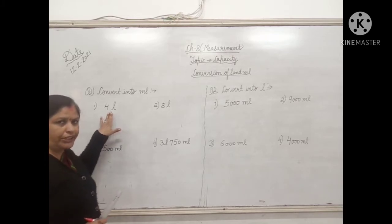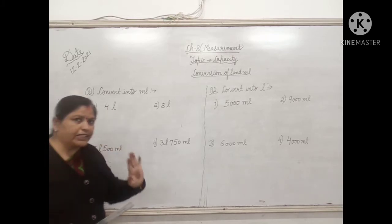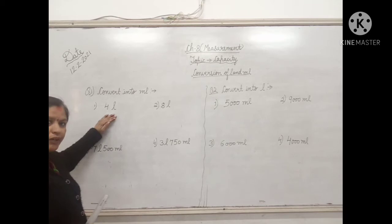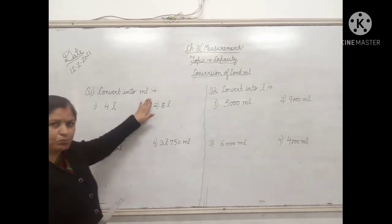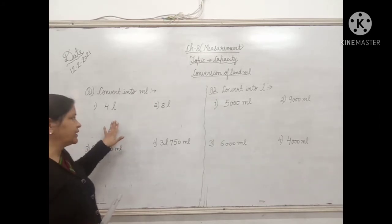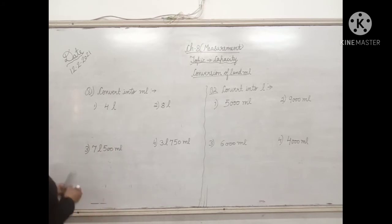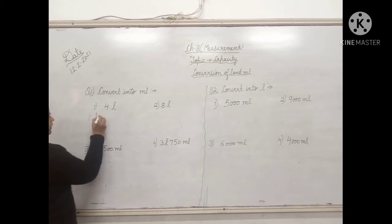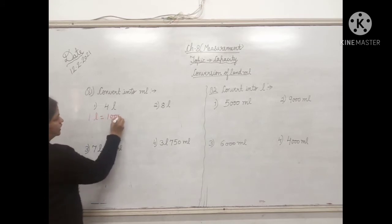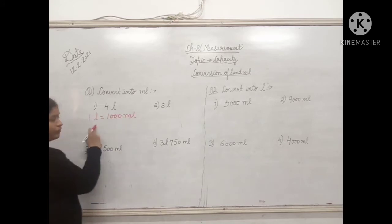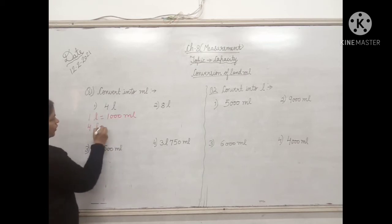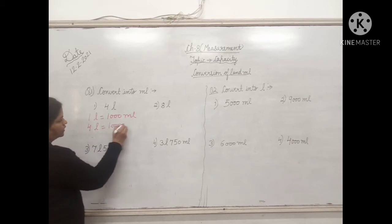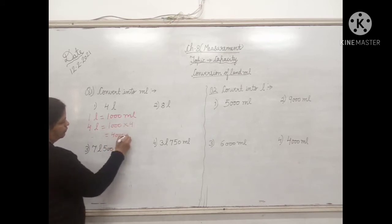The sum is 4 liters. As I have already explained, whenever we have to convert a bigger unit into a smaller unit, we will do multiplication. So first we write the formula: 1 liter equals 1000 milliliter. The sum given is 4 liters, so 4 liter equals 1000 multiplied by 4, that is 4000 milliliter.